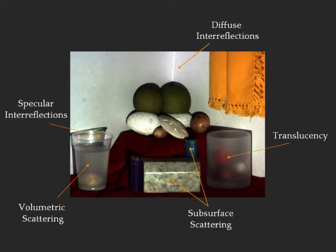With an ideal source and camera, the direct and global components at each pixel can be computed using just two high-frequency illumination patterns.